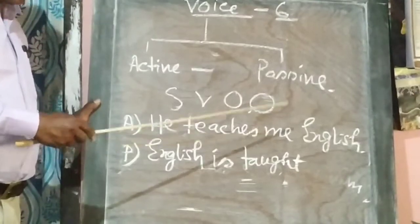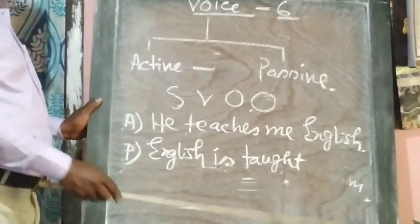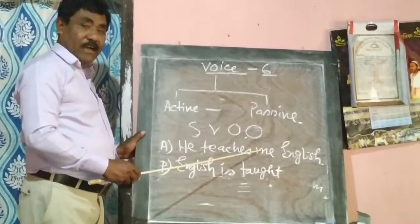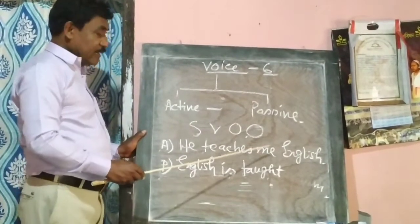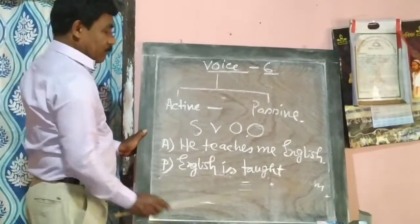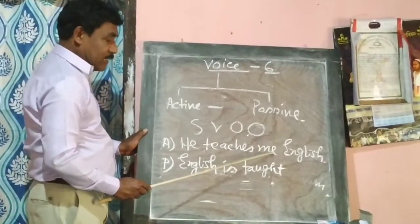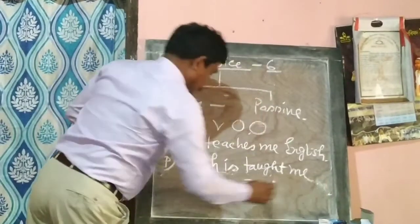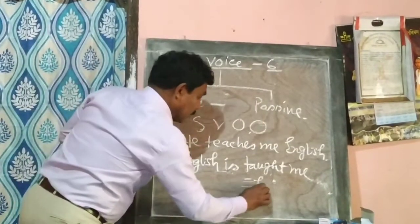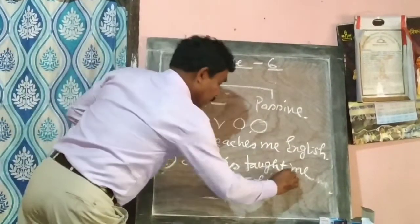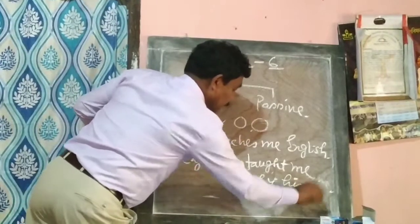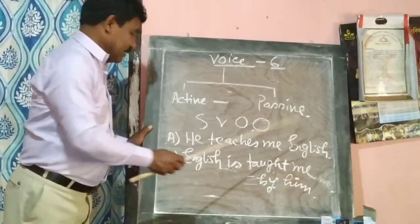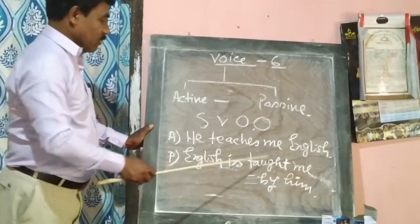We call the remaining element the retained object. So the retained object is 'me.' The full passive sentence is: 'English is taught me by him.'